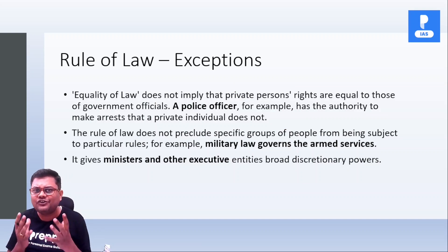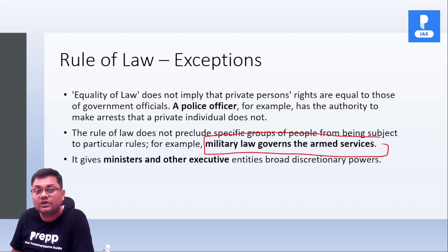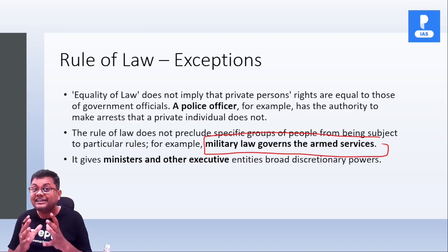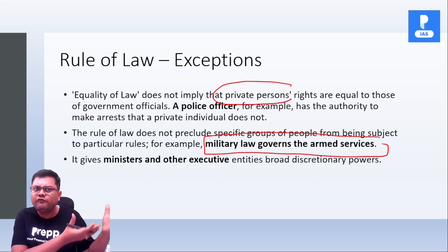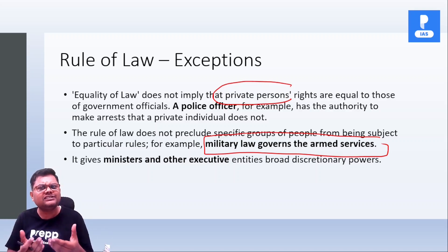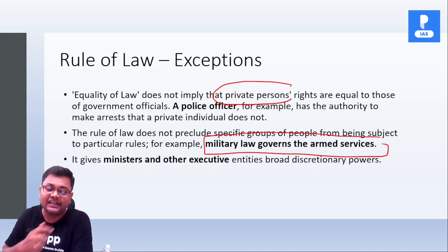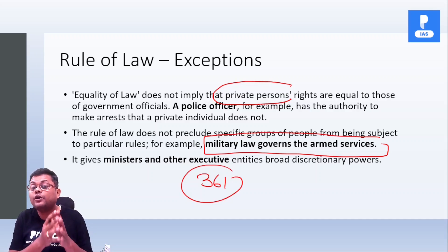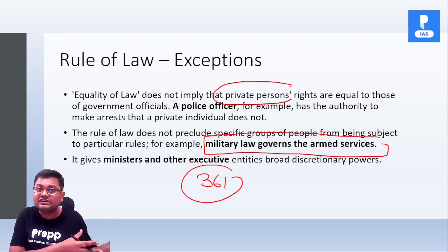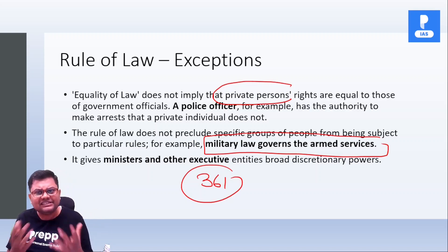But friends, there are certain exceptions to this doctrine of rule of law. For example, jo military law hai, woh armed persons ko govern karta hai. It doesn't imply that private persons — unke jo rights honge — woh government officials ke rights ke barabar honge. For example, police officers unke paas power hoti hai ki woh kisi ko arrest kar sakti hai, but ye power kisi aur ke paas nahi hoti. Similarly, or bhi exceptions hain — for example, President aur Governor. Unke paas kaafi saare privileges hote hain, immunities hoti hain. For example, Article 361 — toh during their term of office, you cannot arrest President, you cannot arrest Governor. Kisi bhi tarah ki criminal proceeding aap start nahi kar sakti ho against Governor or against President during their term of office. Toh these are certain exceptions.